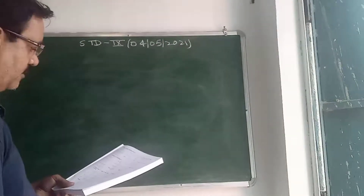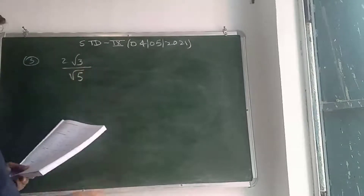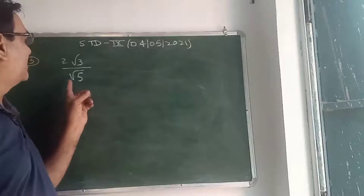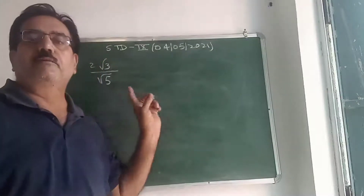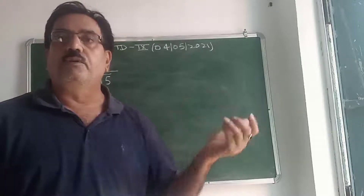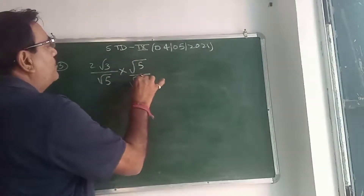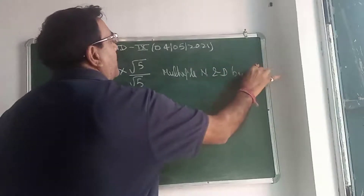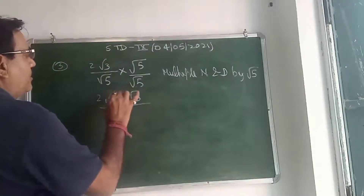Question number 3, first question: 2√3 divided by √5. Here √5 is an irrational number in the denominator, and we have to convert it into a rational number or integer. To do this, multiply the numerator and denominator by √5. So it becomes 2√3 × √5 divided by √5 × √5.